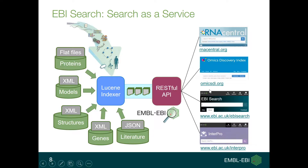For example, on the right side you can see RNA Central, Omics DI Discovery Index, the EBI Search web interface itself — which is a client of the RESTful API — and also InterPro is another example.